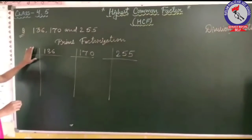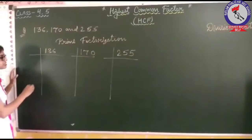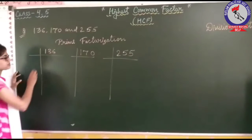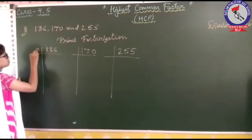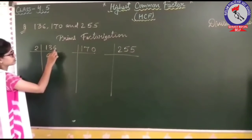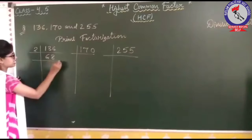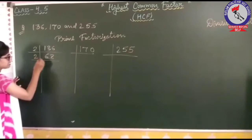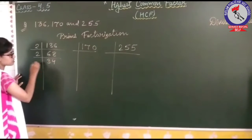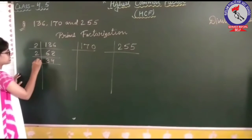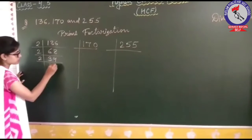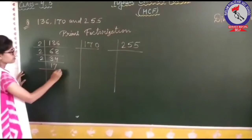Firstly, we will solve 136. It is an even number, so we divide by 2. Continuing to divide: 136 = 2 × 2 × 2 × 17.